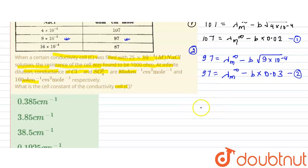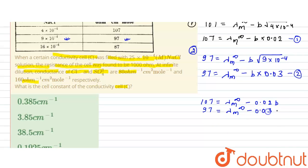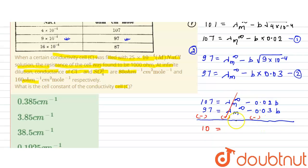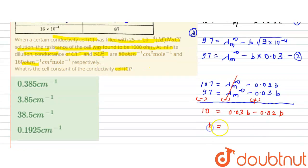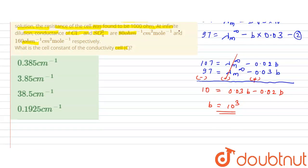Equation 1: 107 = λ∞ − 0.02b. Equation 2: 97 = λ∞ − 0.03b. Subtracting equation 2 from equation 1, the λ∞ terms cancel out: 10 = 0.03b − 0.02b = 0.01b. Therefore b = 10 / 0.01 = 1000.